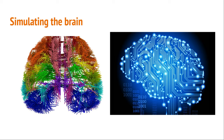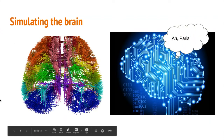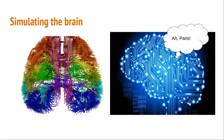And who knows? Maybe this simulated brain will actually want to go to Paris — maybe that will be something it wants to do. How would we know? How would we know if it's really thinking those things or just pretending? How will we be able to test whether it is truly conscious or whether it is just simulating those things really well? For that matter, if I talk to you as a person, how do I know whether you're really conscious? Maybe you're just pretending really well.